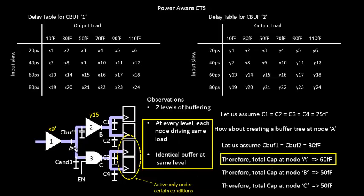Let's try a different value here — it could be less or more. We'll say the capacitance at node A is 70 femtofarads. Since it's no longer the addition of two buffer input capacitances, but rather the addition of one buffer input capacitance and one AND gate input capacitance, the total capacitance at node A is 70 femtofarads.